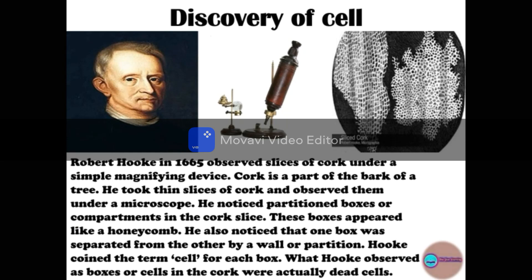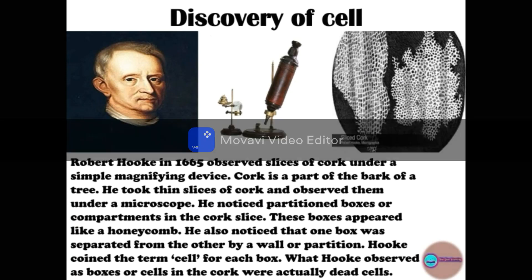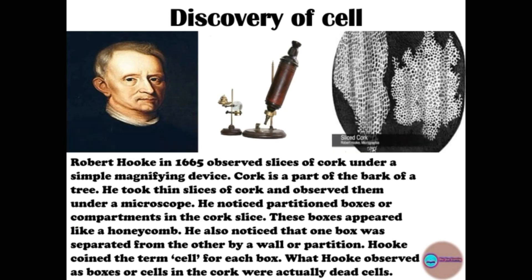He observed partitioned boxes or compartments in the cork slice. Later on, these compartments were called cells. These boxes appeared like a honeycomb. Each compartment is separated from one another by a wall. He observed that the boxes or cells in the cork were actually dead cells.